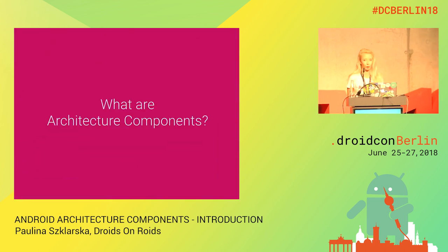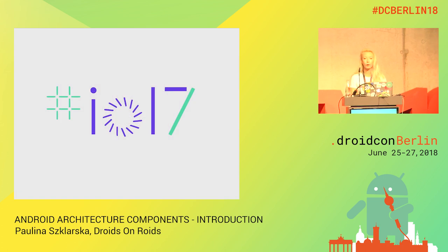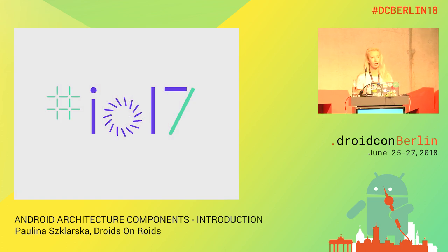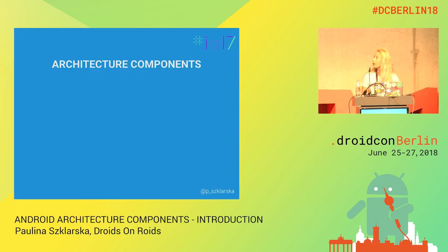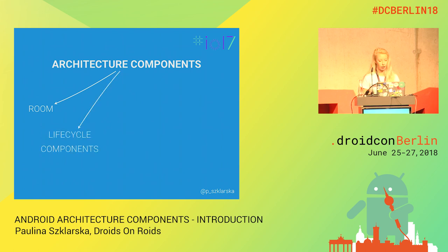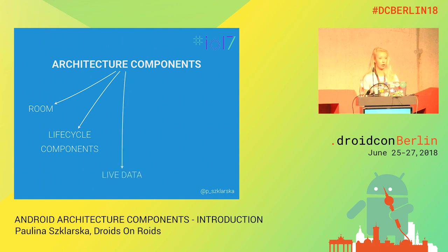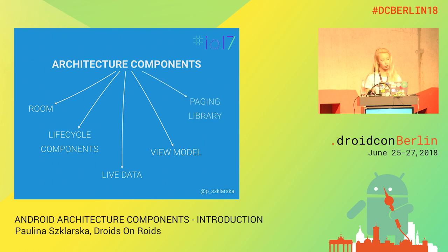So what are architecture components? At Google I/O in May 2017, there was announced a set of libraries called architecture components. In this set there were smaller libraries like Room — a library for data persistence — lifecycle components for handling lifecycle of UI, LiveData which is a lifecycle-aware data holder, a ViewModel for storing data for activity or fragment, and a paging library for pagination with RecyclerView.